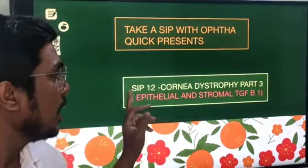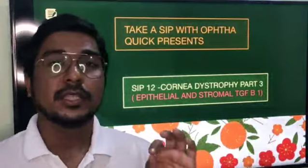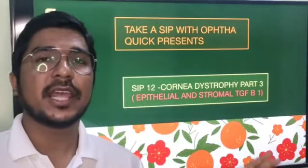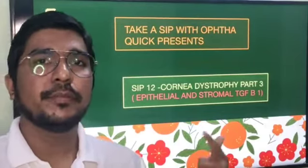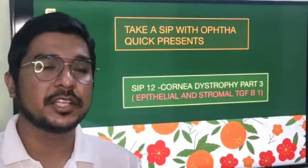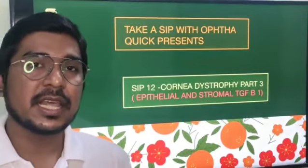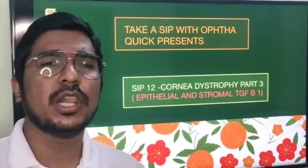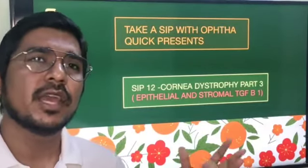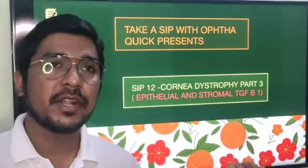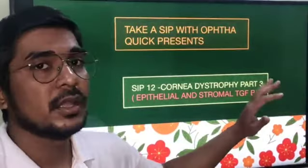We are here with SIP 12 — corneal dystrophy part 3 — where we will discuss the epithelial and stromal TGF beta-1 related things. The IC3D classification is not anatomical. Earlier, the anatomical classification was followed: epithelial dystrophy, Bowman's membrane dystrophy, stromal dystrophy, and Descemet's and endothelial dystrophy. However, most corneal dystrophies are not limited to one layer, so the IC3D classification came into play, as discussed in SIP 11.